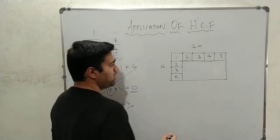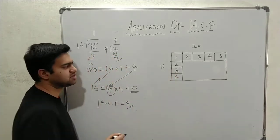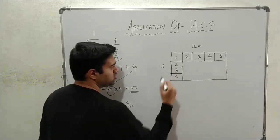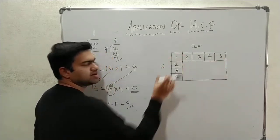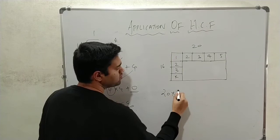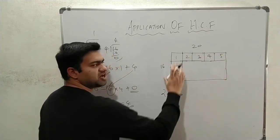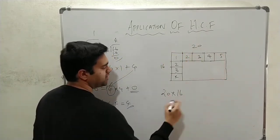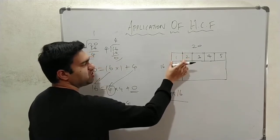Now, total number of tiles. Total area divided by the area of a single tile. So, total area is length into breadth. This is a rectangle. So, area of a rectangle is length into breadth. Divided by the area of a single tile.